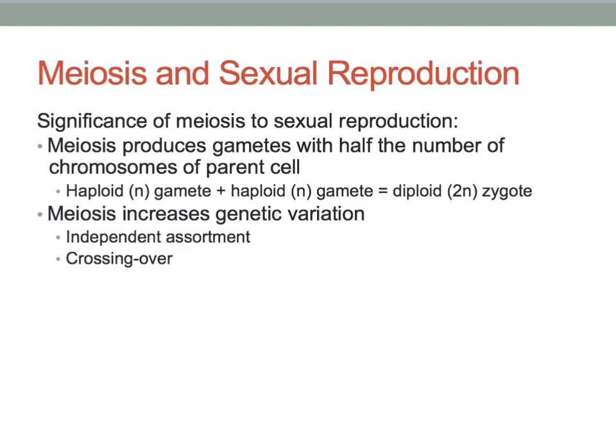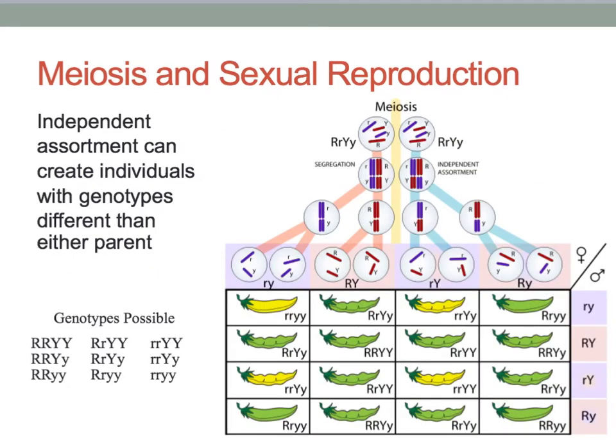Meiosis also increases genetic variation through the processes explained earlier. Independent assortment and crossing over increase genetic variation, which increases the chances of survival of the species. This visualization shows how independent assortment during meiosis can create individuals with genotypes different from that of either parent.